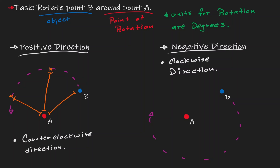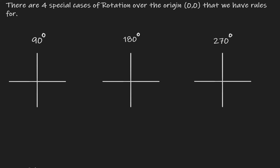Let's take a look at some specific cases for rotation. There are four special cases when it comes to rotation. When we make the origin the point of rotation, there are four special cases that we have rules for. But first, let's understand what we mean by rotating 90 degrees, 180 degrees, and 270 degrees. The starting point is always the positive side of the x-axis. A full circle gives us 360 degrees, and 90 degrees is one quarter of the circle.